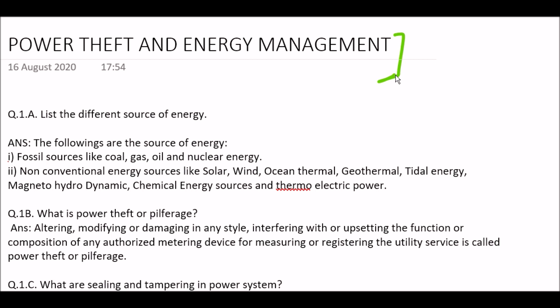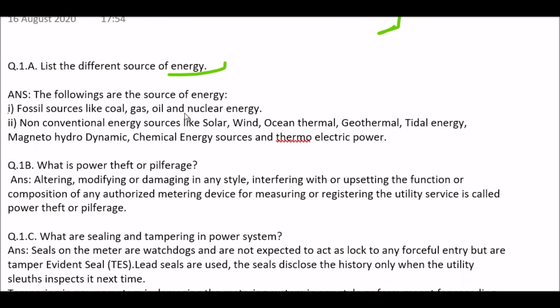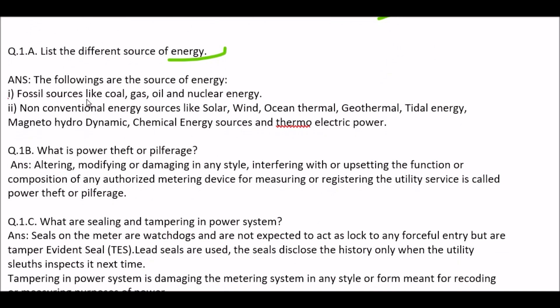Let's begin. The first question is: list the different sources of energy. The sources of energy are: first, fossil sources like coal, gas, oil, and nuclear energy; next, non-conventional energy sources like solar, wind, ocean thermal, geothermal, tidal energy, magnetohydrodynamic, chemical energy sources, and thermoelectric power.